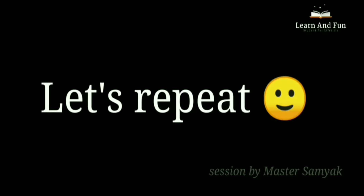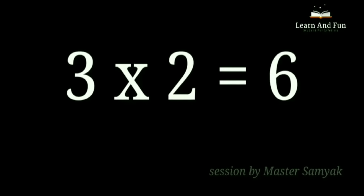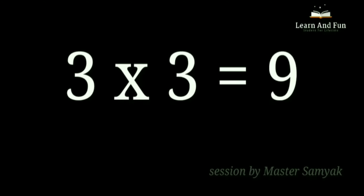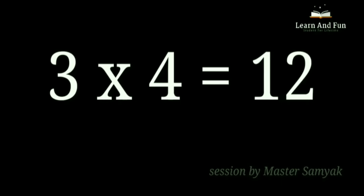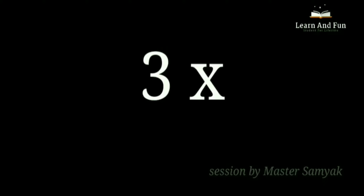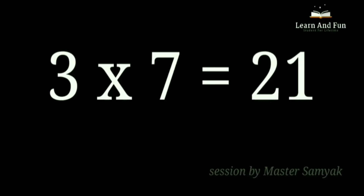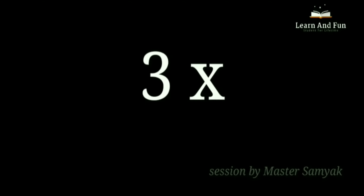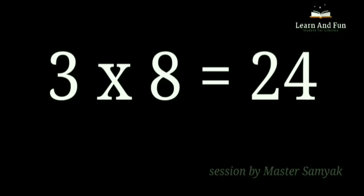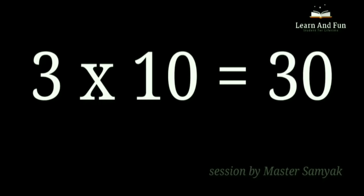Let's repeat. 3 ones are 3. 3 twos are 6. 3 fours are 12. 3 fives are 15. 3 sixes are 18. 3 sevens are 21. 3 eights are 24. 3 nines are 27. 3 tens are 30.